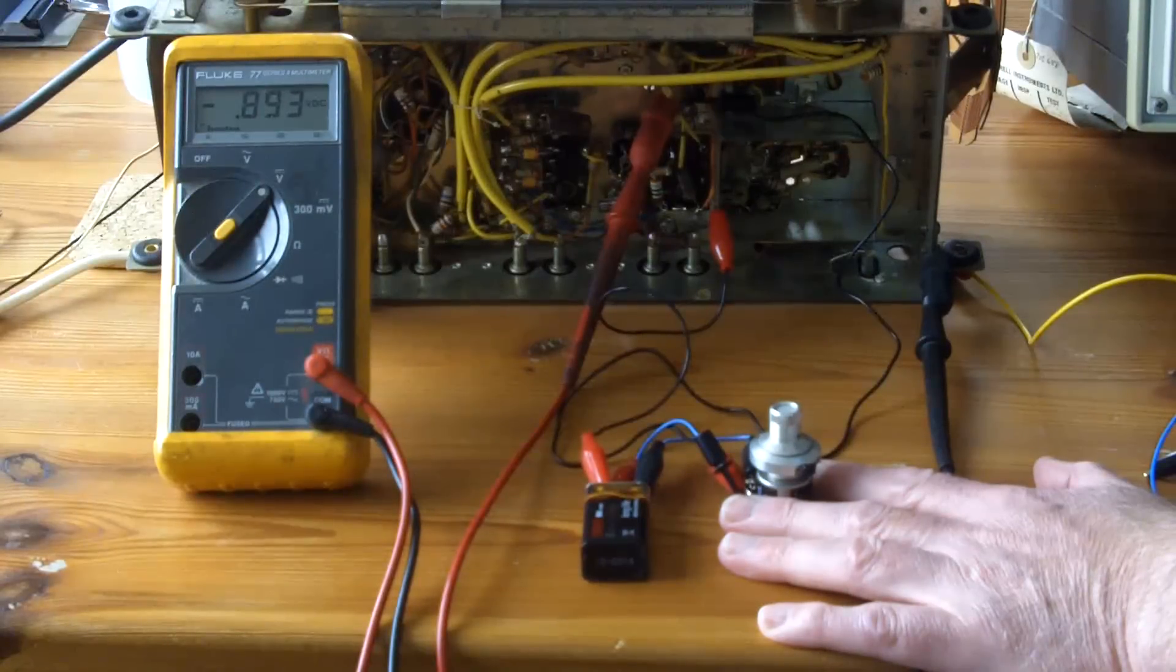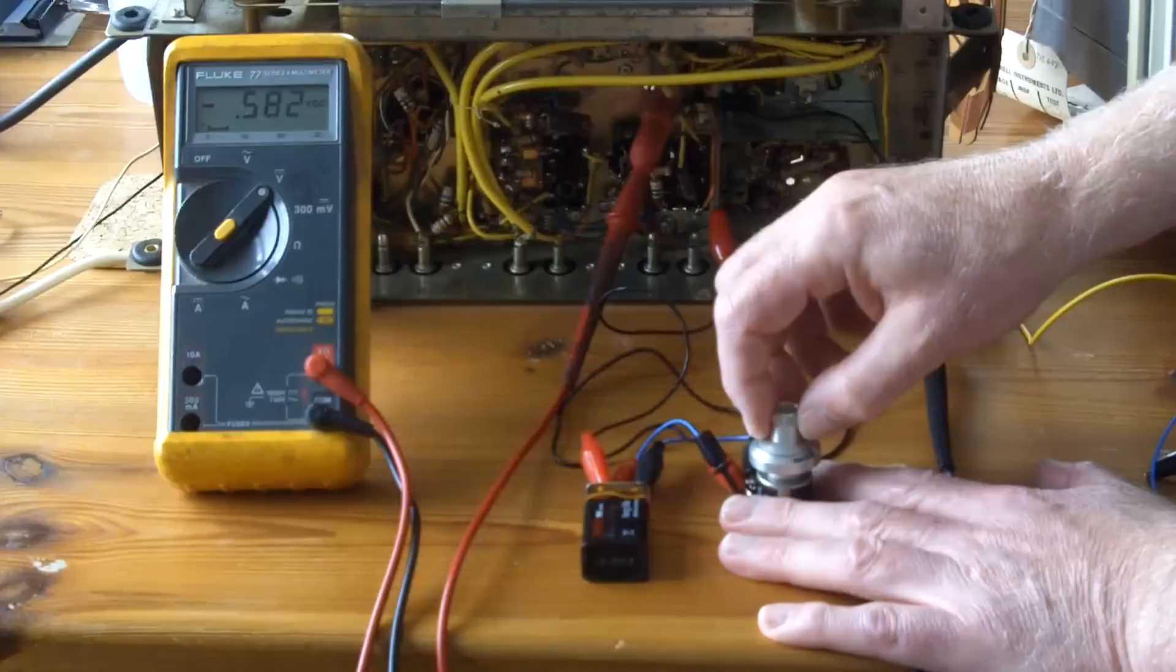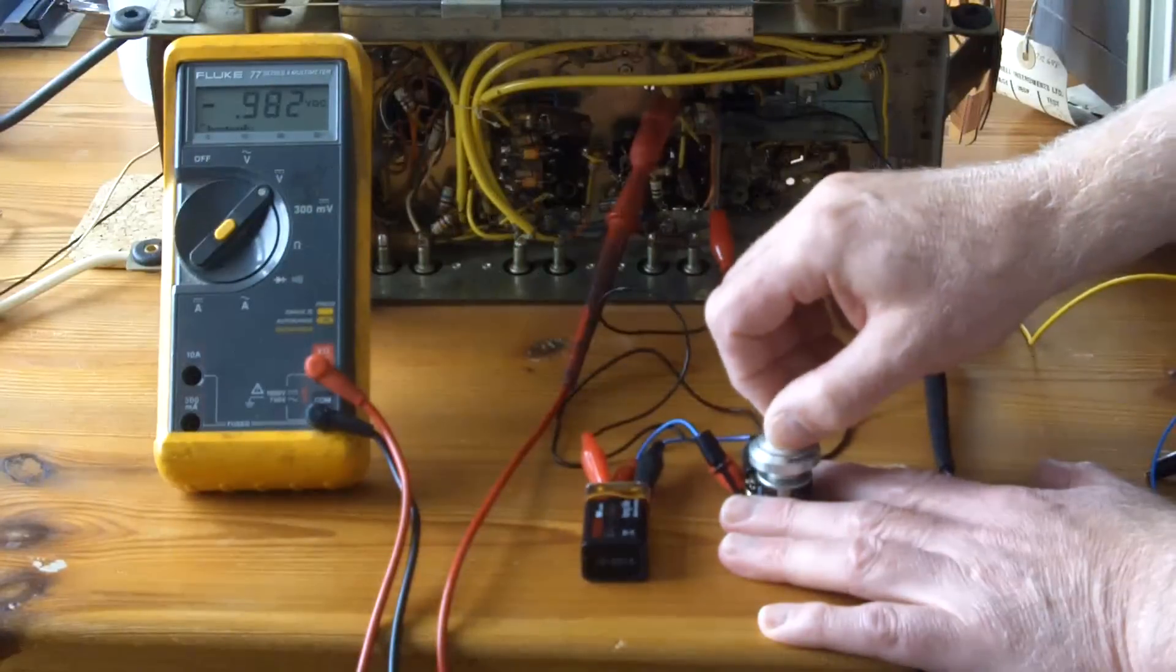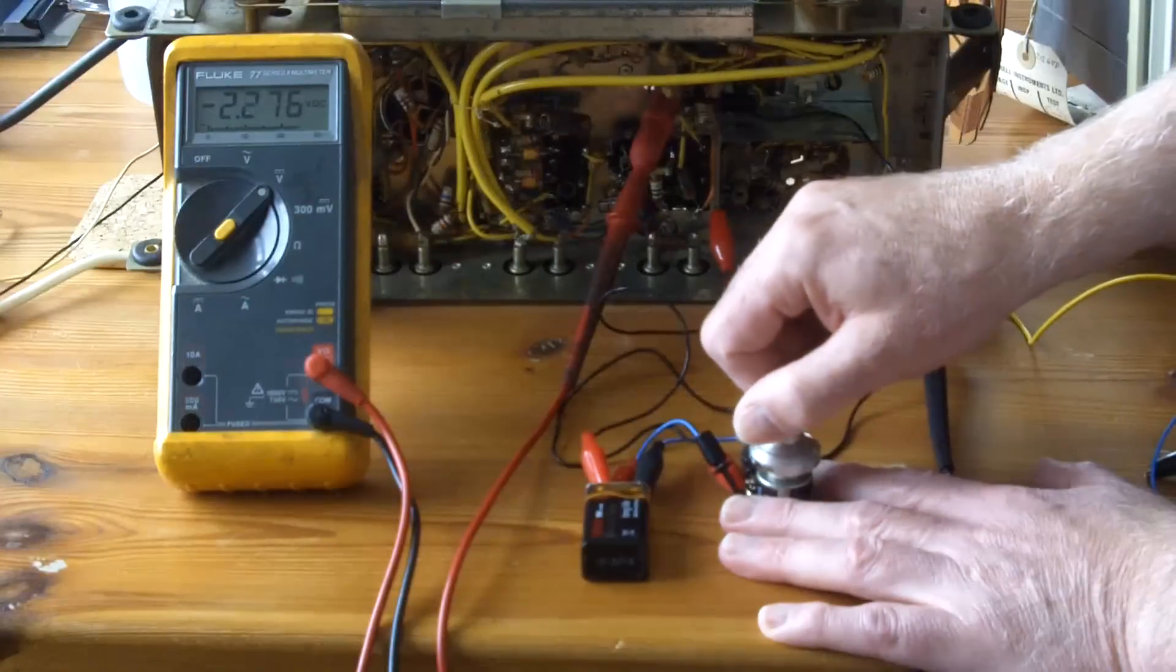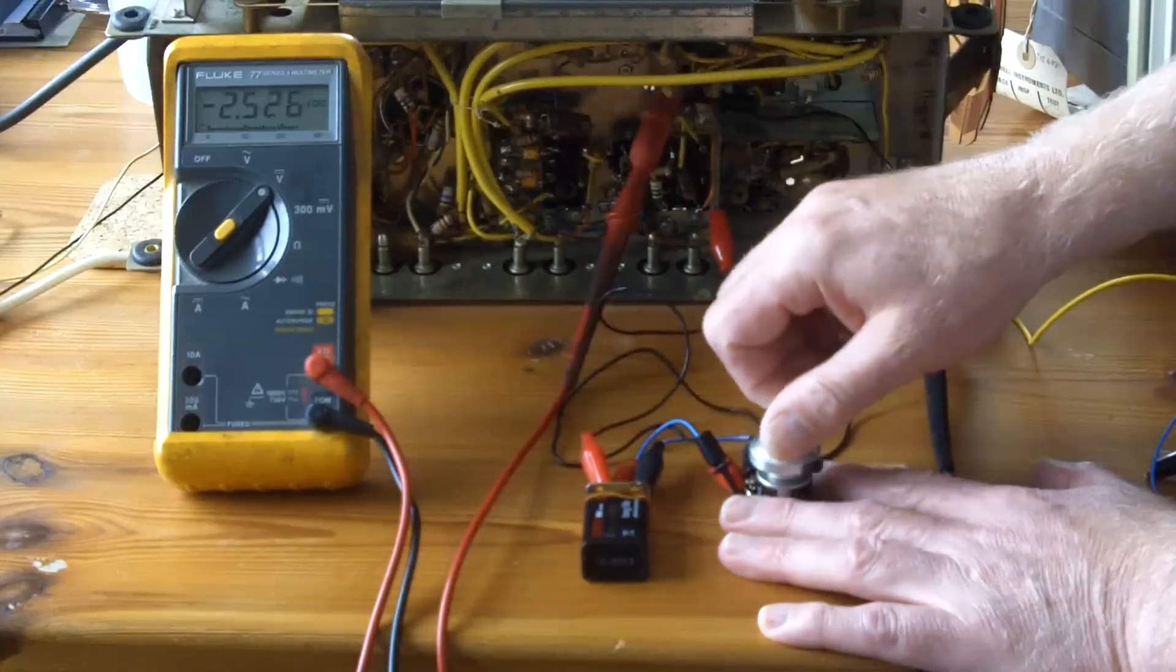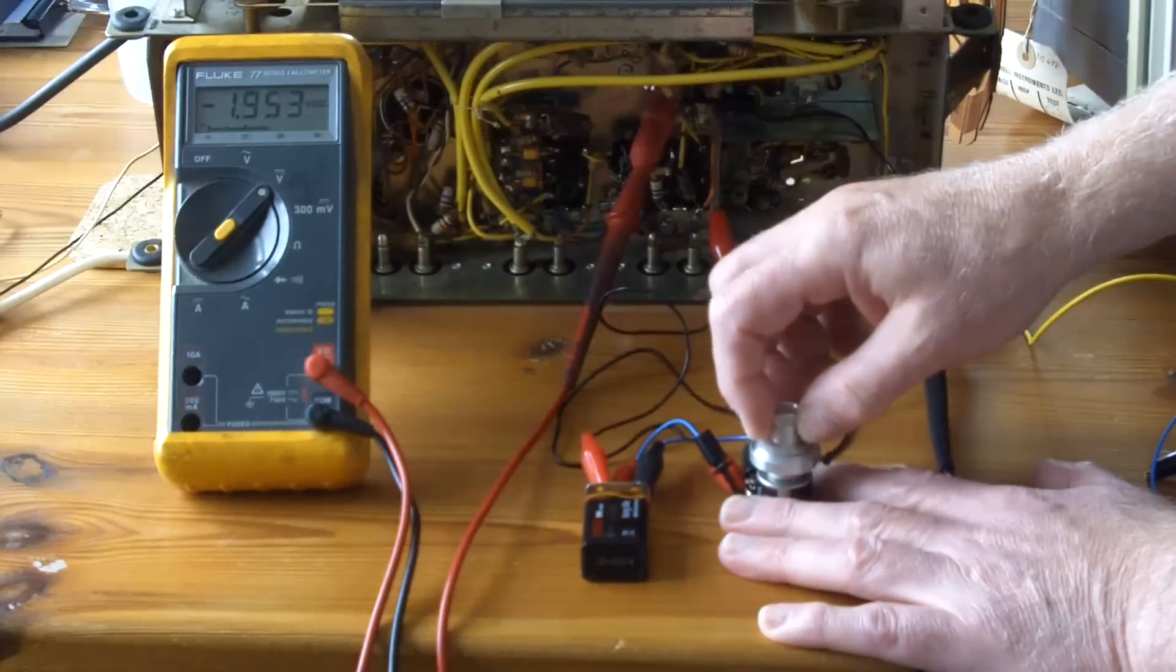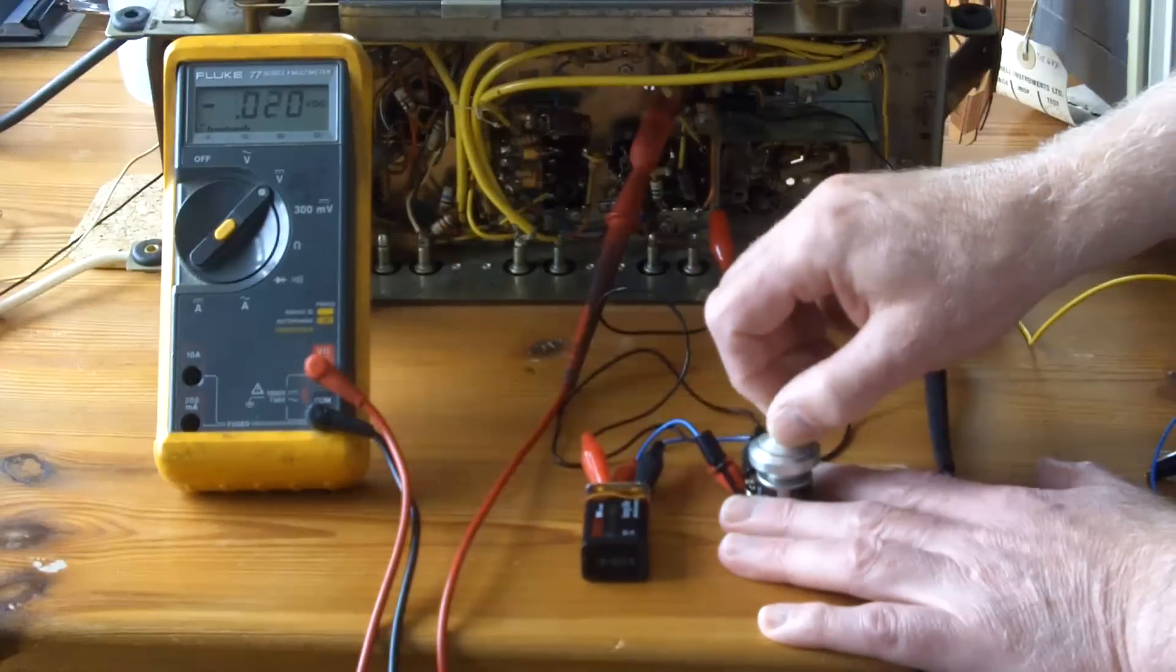And I said that I would talk a little bit more about the AVC or the automatic volume control. In this short video I just want to show you what happens when I introduce a negative voltage onto the second input grid on the little mixer valve.